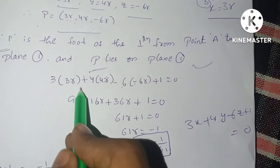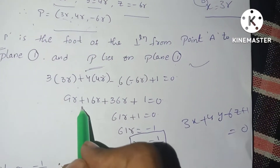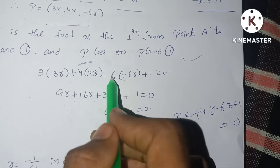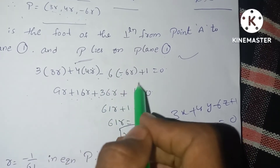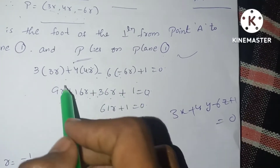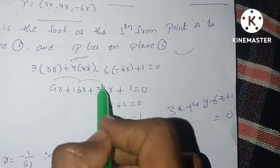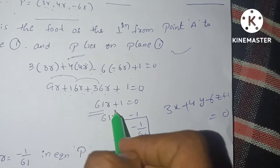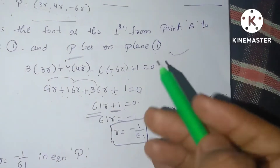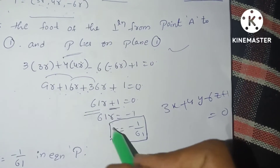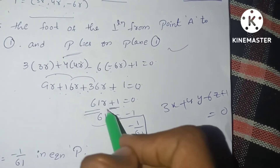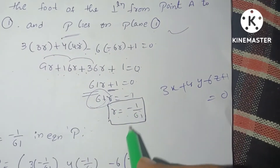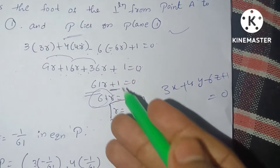Expanding: 3 × 3R = 9R, plus 4 × 4R = 16R, and -6 × (-6R) = +36R, plus 1 = 0. So 9 + 16 + 36 = 61, giving us 61R + 1 = 0, therefore R = -1/61.